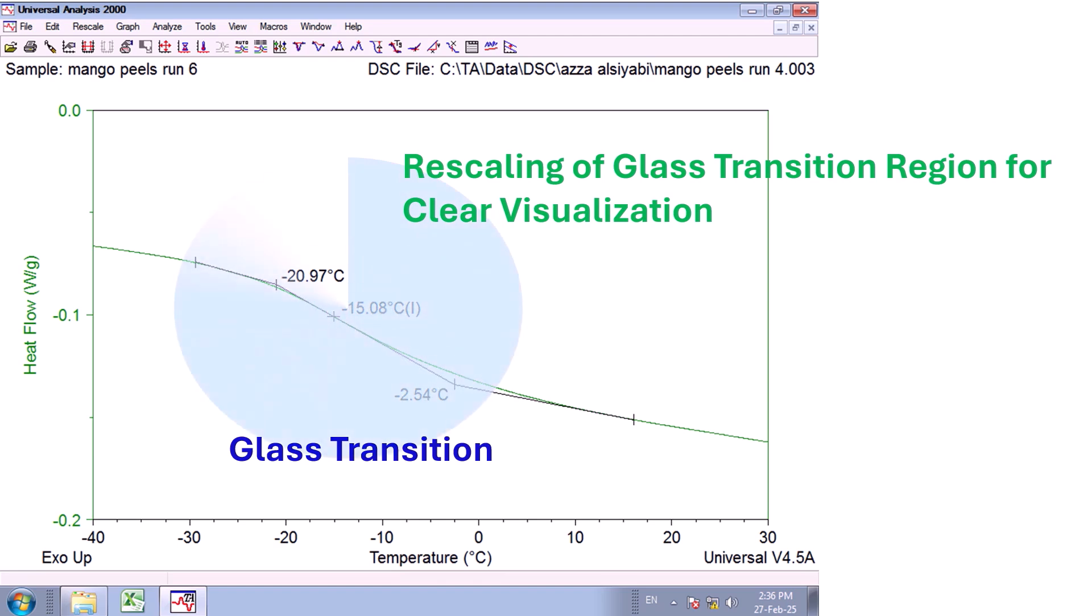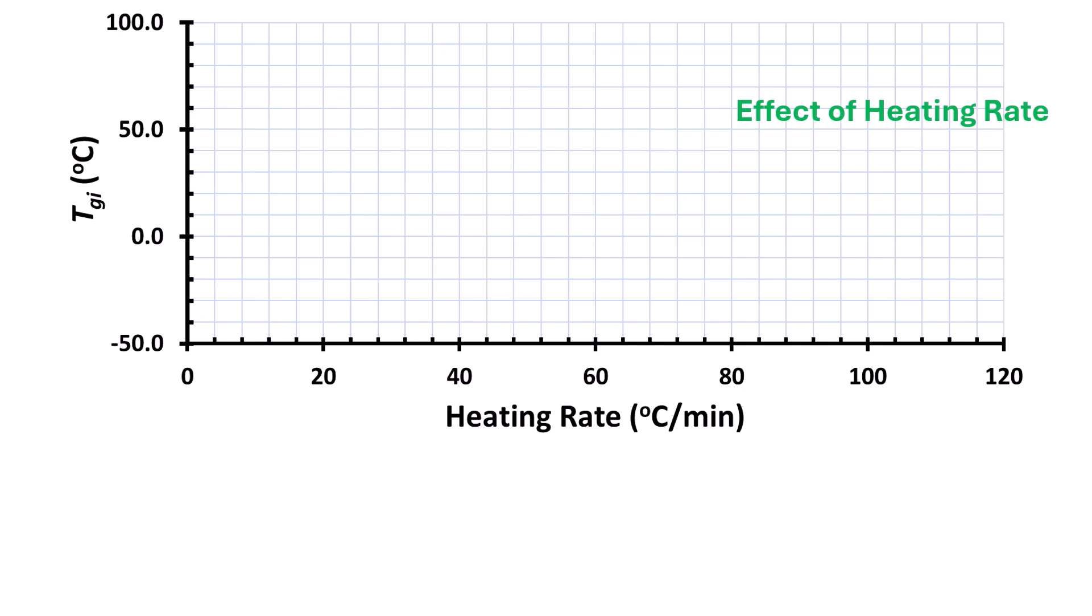In this slide, we could observe a clear glass transition region after rescaling of the heat flow axis and temperature axis. Heat flow curve during heating is commonly used to determine the thermal characteristics since there is a lag in cooling cycle. The glass transition is also affected by the heating rate and the effect of heating rate could be used to determine the structural characteristics of biomaterial.